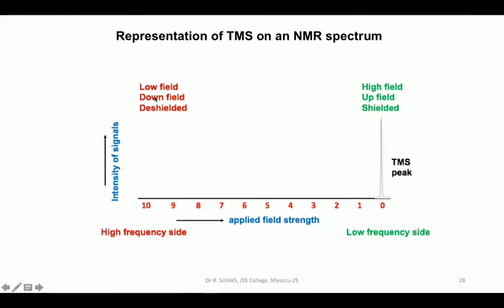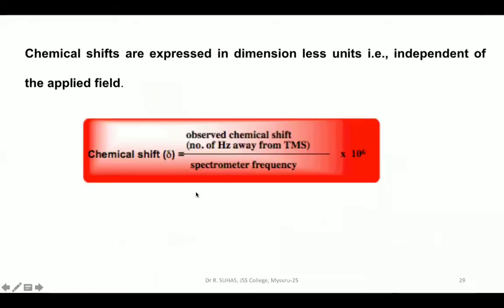Opposite terms apply to the higher-frequency side: low-field, down-field, and deshielded. These six terms are very important for learning chemical shift. Whenever we say high-field, up-field, or shielded, those protons will have low chemical shift values. Whenever we say low-field, down-field, or deshielded, they will have higher chemical shift values.